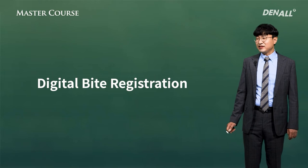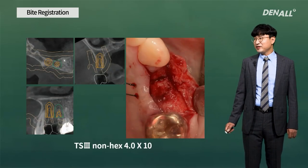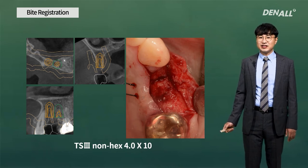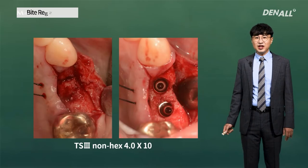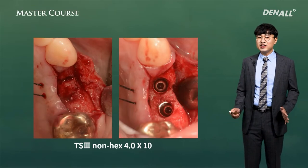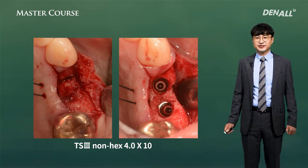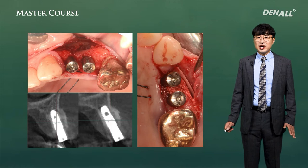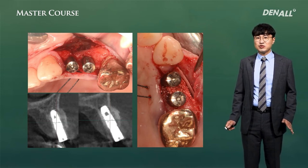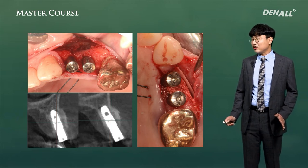Now let's look at digital bite registration. In this case, the bone width is very small. To place the implant, I did guide design first. Using an osteotome expansion kit, the bone width was expanded and a non-hex fixture was placed. As there was not much bone on the buccal side, bone grafting was done. The residual bone was not enough, so the implant was angled slightly toward the buccal.